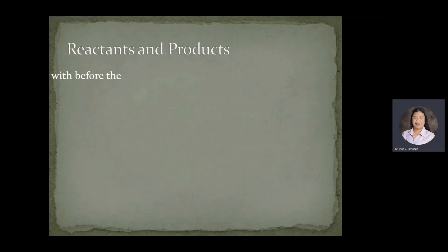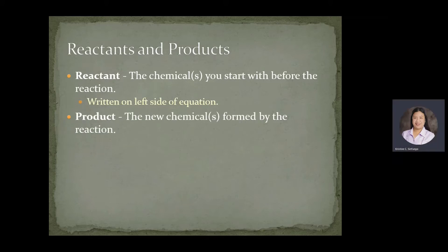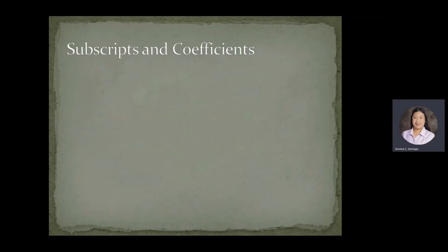So what are the reactants and products? A reactant is a chemical, or the chemicals you start with before the reaction, and it is written on the left side of the equation. A product is the new chemical formed by the reaction and is usually written on the right side of the equation.